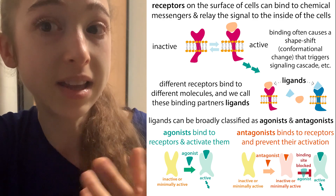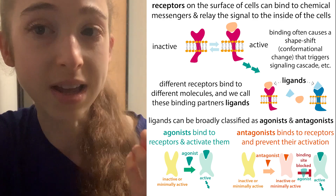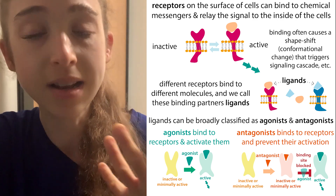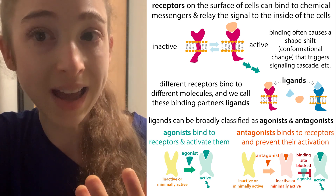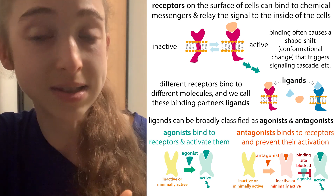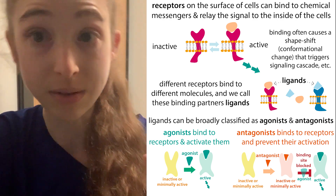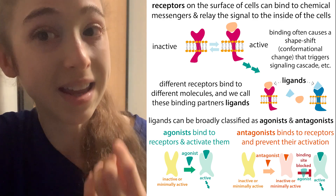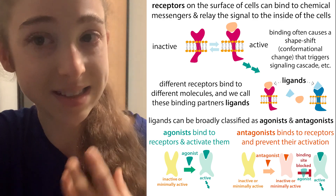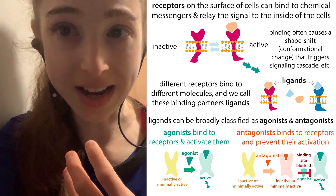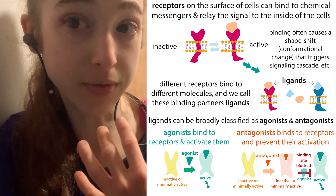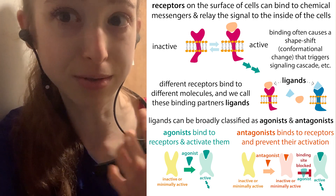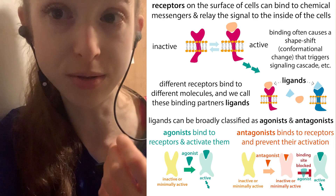If the ligand binds to the receptor and causes it to be activated, we call it an agonist. If it binds to the receptor and prevents the agonist from binding, it's an antagonist. These terms — agonist and antagonist — are often used in pharmacology when talking about pharmaceutical or non-pharmaceutical drugs.